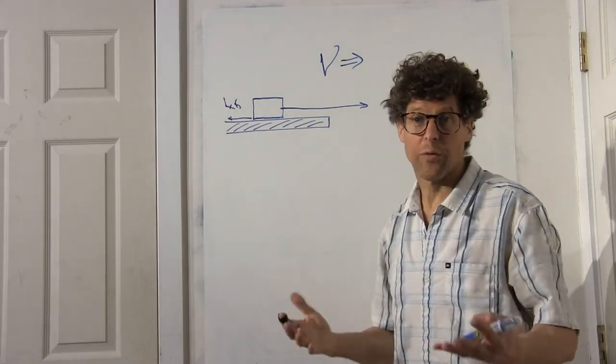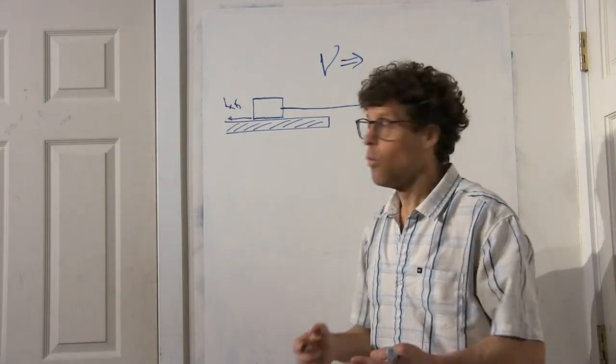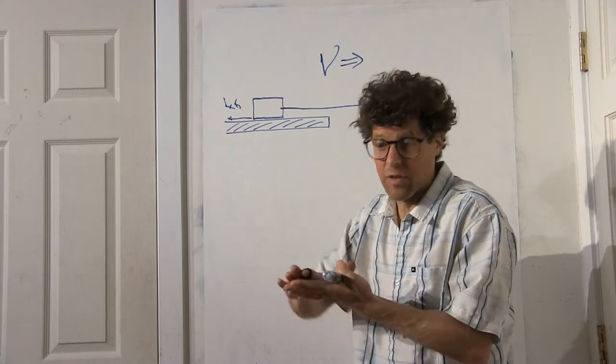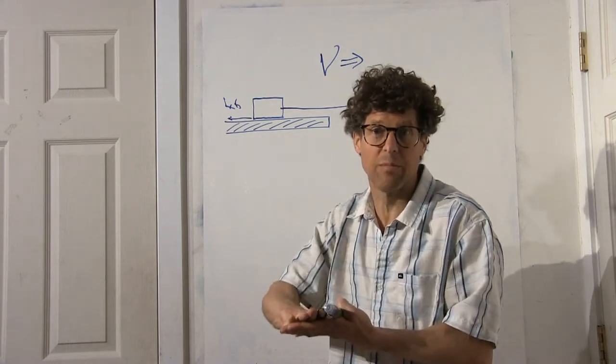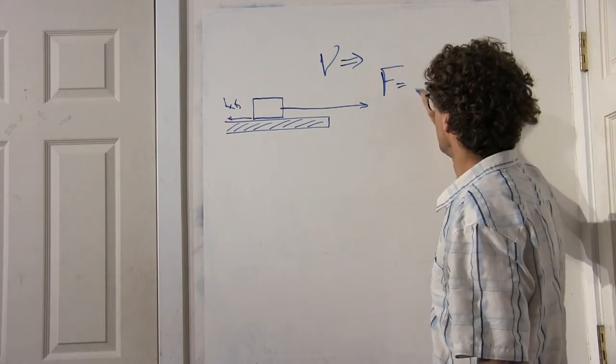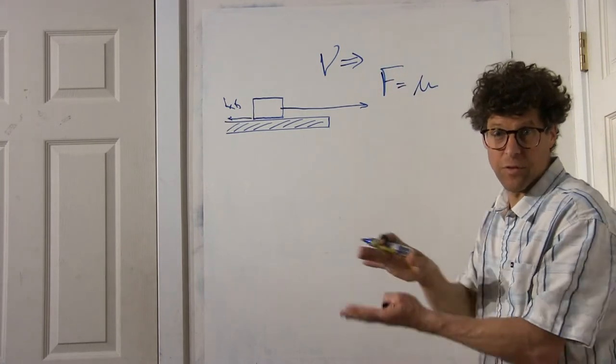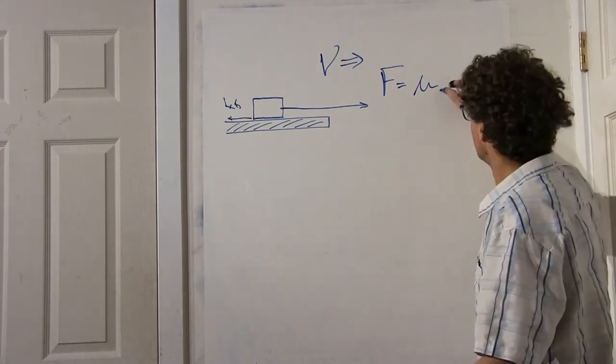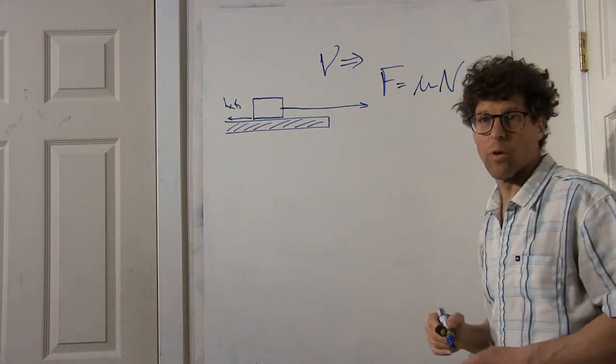The magnitude of friction depends on two things: one, how sticky the surface is, and two, how hard you push them together. We can write the force of friction is equal to mu, how sticky the surfaces are with respect to each other, times n, the normal force.